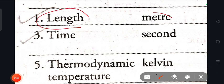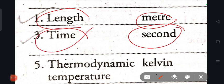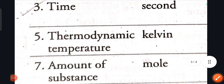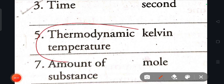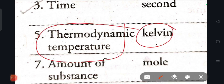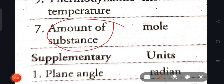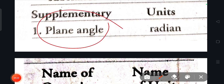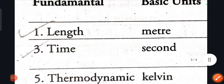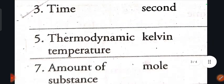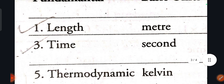For SI units: the unit of length is the meter, the unit of time is the second, the unit of thermodynamic temperature is Kelvin, the unit of amount of substance is the mole, and the unit of plane angle is the radian.